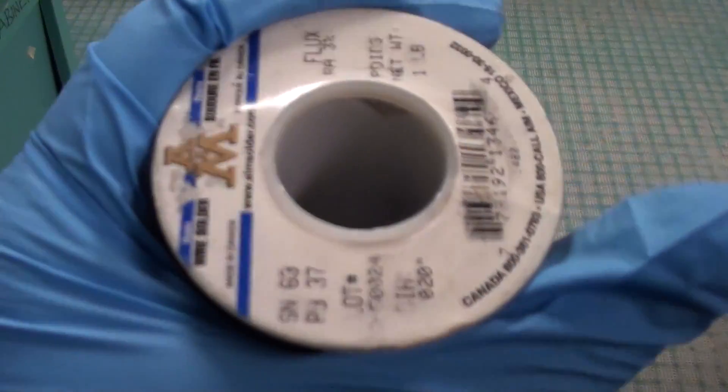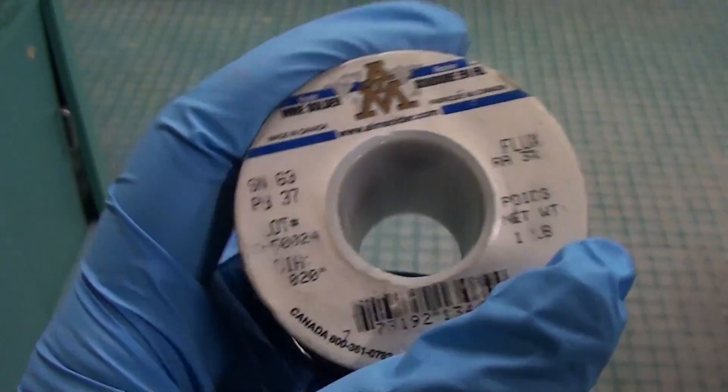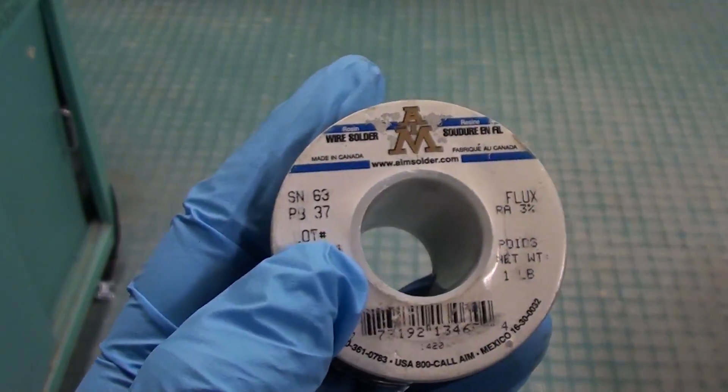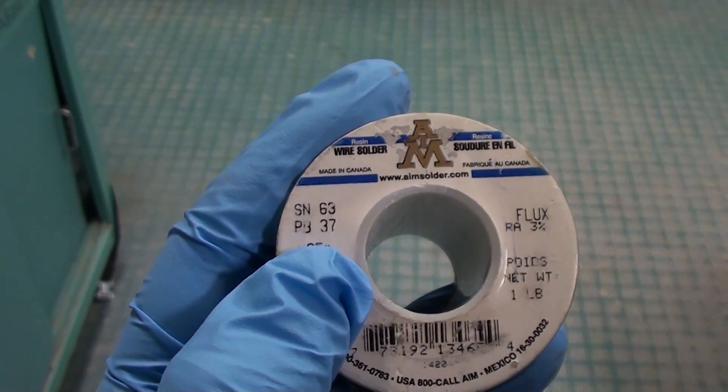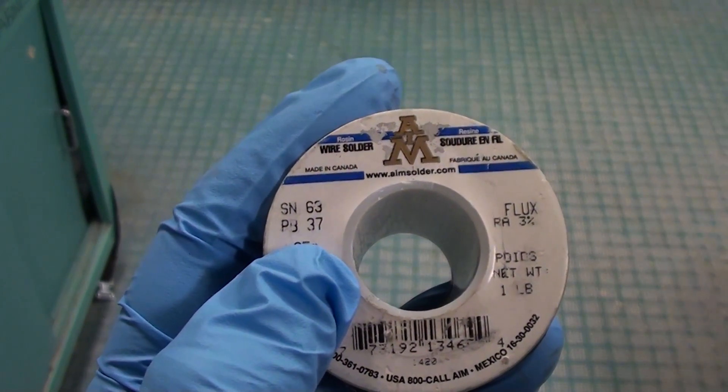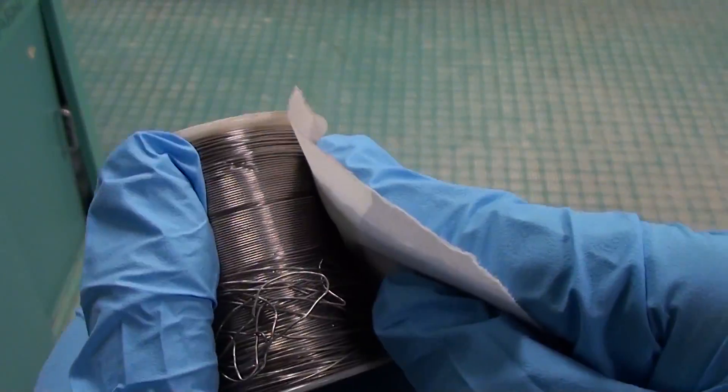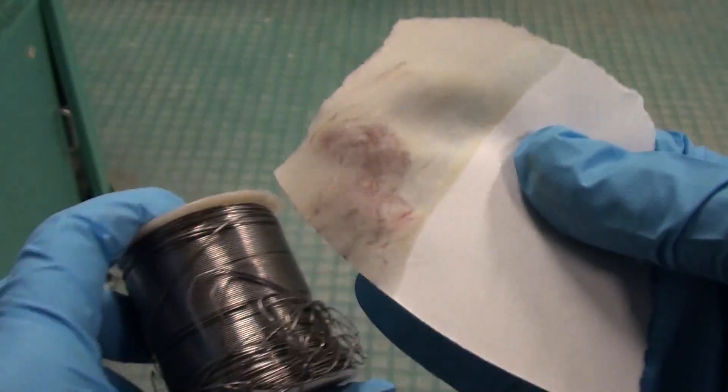Let's try something more common now. I have here some lead based solder. It's hard to see but the label says it's made of 63% tin and 37% lead. Let's rub the test paper and there we go, a clear positive for lead.